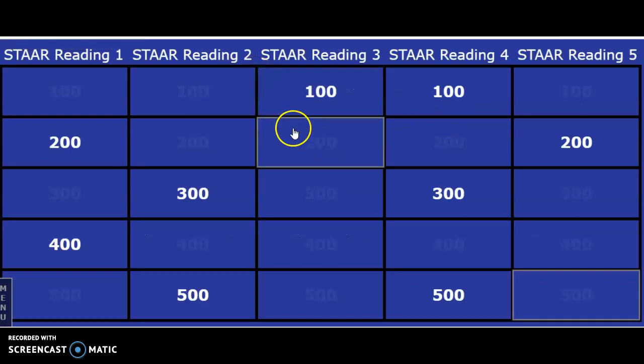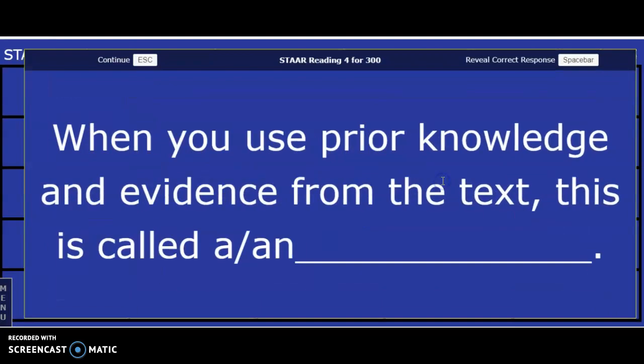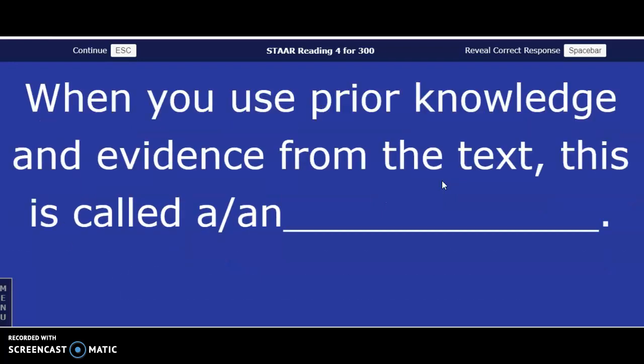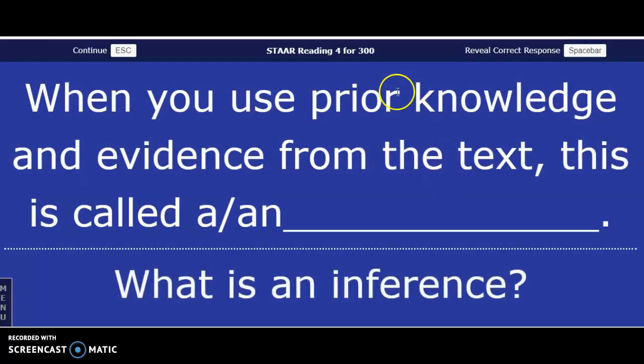When you use prior knowledge and evidence from the text, this is called a or an — the answer in three, two, one — an inference. Using your background knowledge, which is also called schema, and your text clues or text evidence.